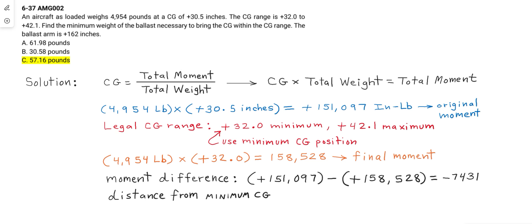The next step is to calculate the distance from the minimum CG to the ballast. That is positive 32.0 minus positive 162 to compute a distance of negative 130 inches, which is the distance from the minimum CG position to the ballast position.